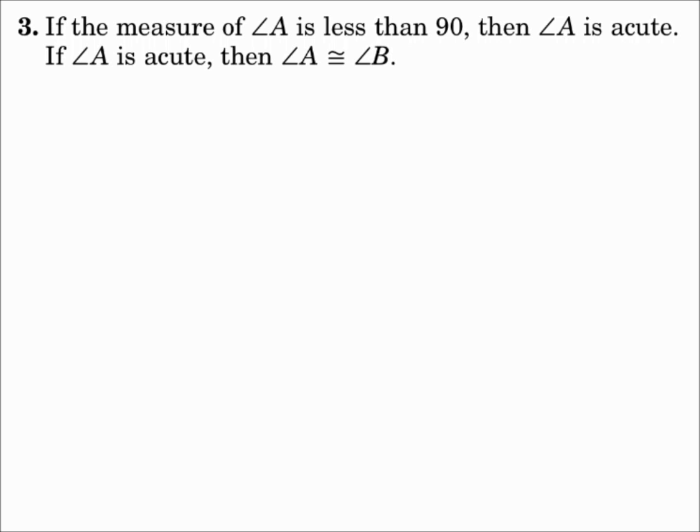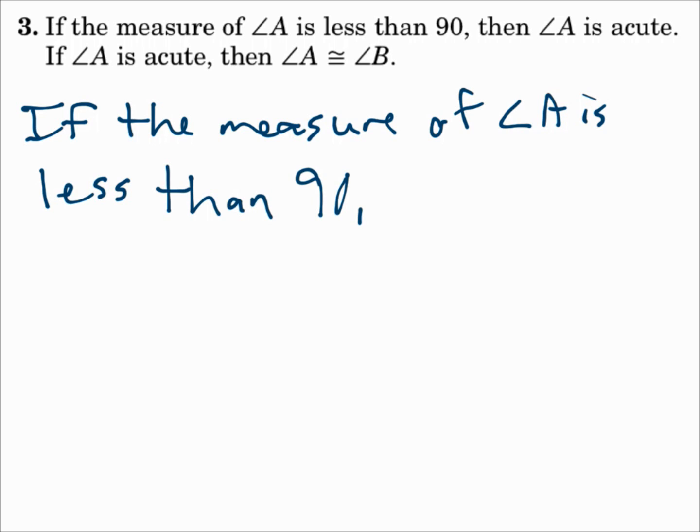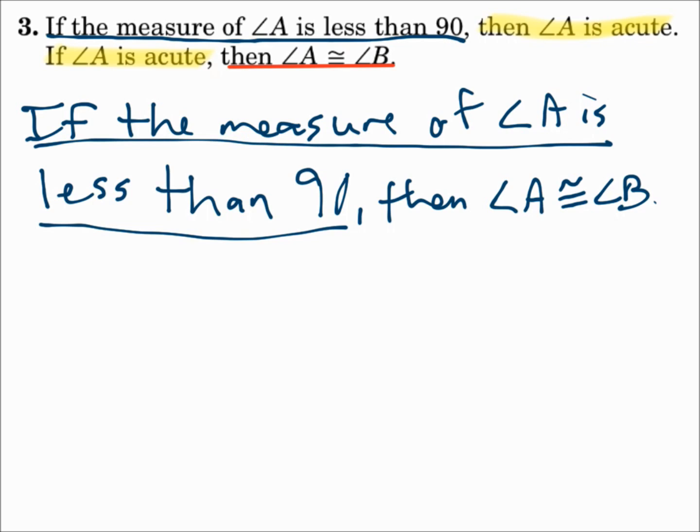Number three. If the measure of angle A is less than 90, then angle A is acute. If angle A is acute, then angle A is congruent to angle B. That's definitely a P to Q and a Q to R, so say P to R. If the measure of angle A is less than 90, then angle A is congruent to angle B. P goes to Q, Q goes to R, so P goes to R. That's syllogism.